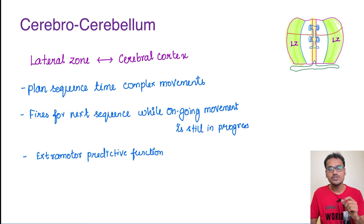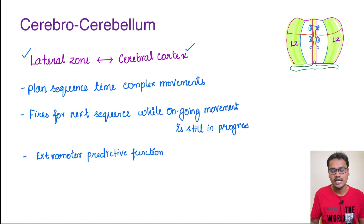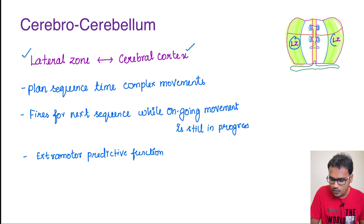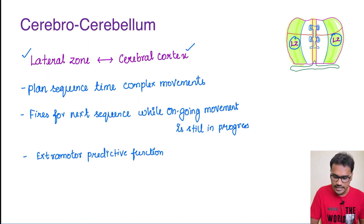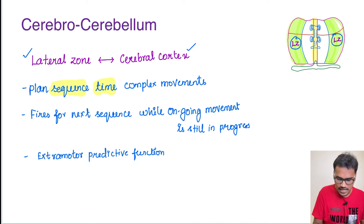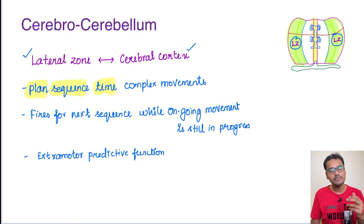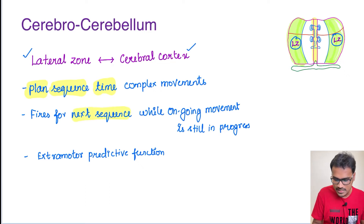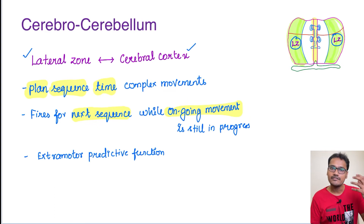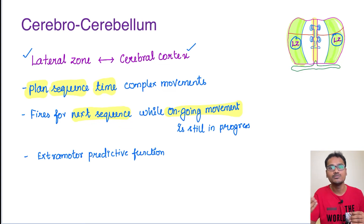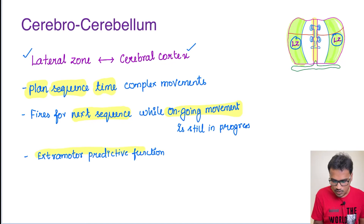Coming to the third zone — the cerebrocerebellum — this involves the lateral zone and the cerebellar cortex. The lateral zone does not have any homunculus representation. Its primary function is the planning of movements — it plans the timing of movements, sequence of movements, and the overall plan of the movement. An interesting thing about the cerebellum is that it fires the next sequence while an ongoing movement is going on. Whenever cerebellar neurons were observed during movement, a pattern was generated for the next movement, meaning the cerebellum is ready for the next action. That is how powerful the cerebellum is, and it also does extra motor predictive functions.